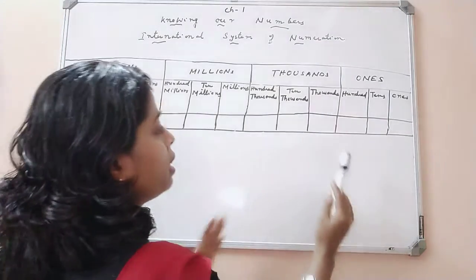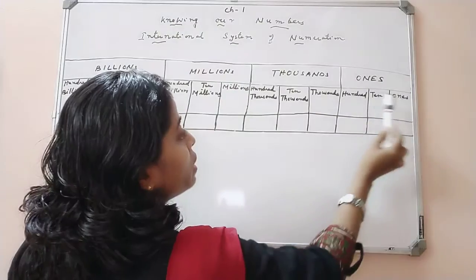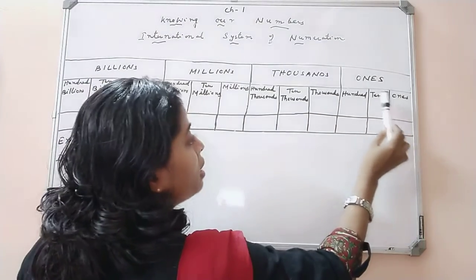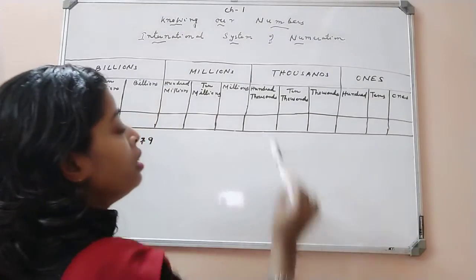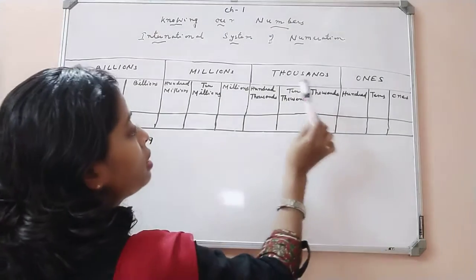Again, these periods consist of different places. Like ones period consists of three places: ones, tens and hundreds. Thousands period consists of three places: thousands, ten thousands, hundred thousands.